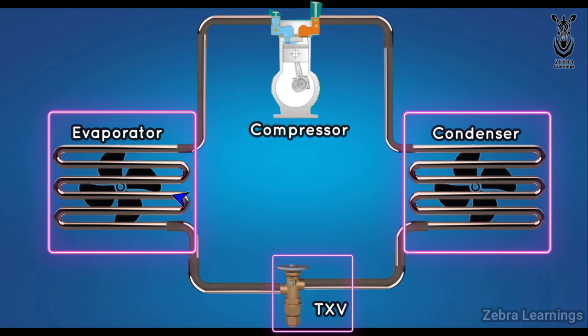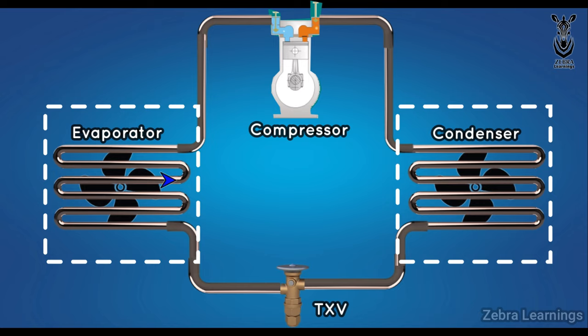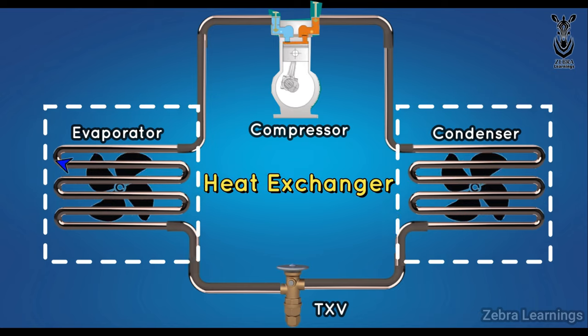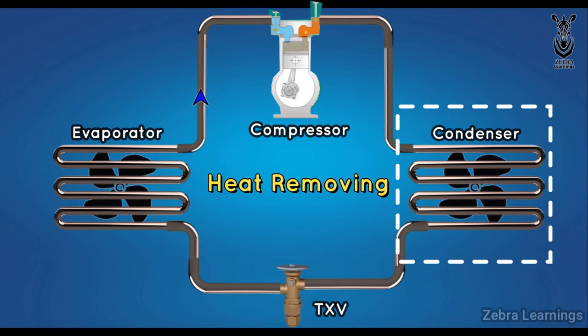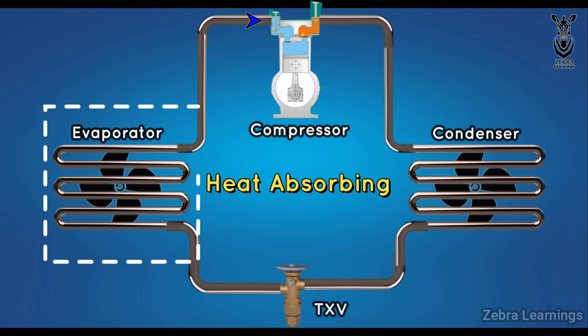Condenser and evaporator work as heat exchangers. Heat is rejected in the condenser and heat is absorbed in the evaporator.